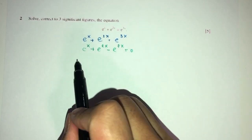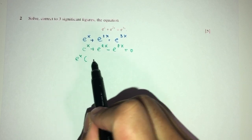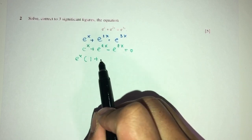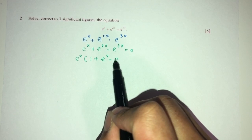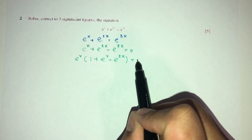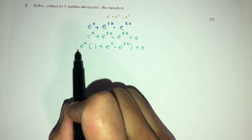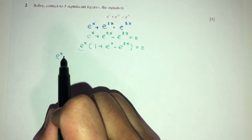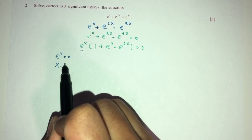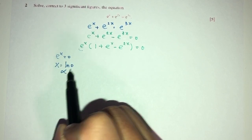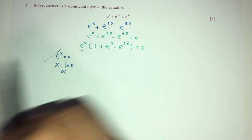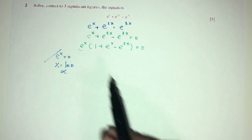Now, we can first factorize e^x outside. You will have 1 + e^x - e^(2x) is 0. Now, the first value I can equate will be this one. So, e^x is 0. x will be ln of 0 which is not possible. So, this one will not be taken as one of the answers. So, we have to move on for the rest.